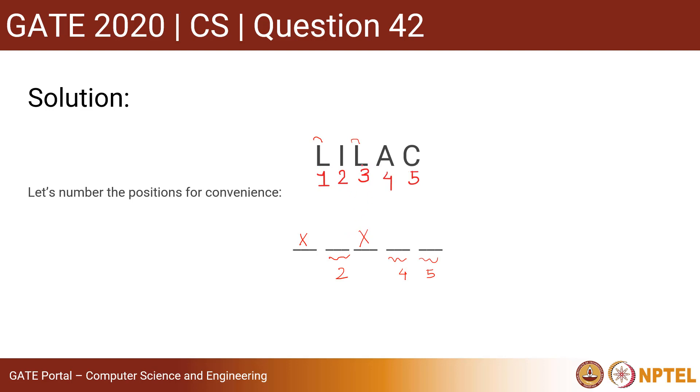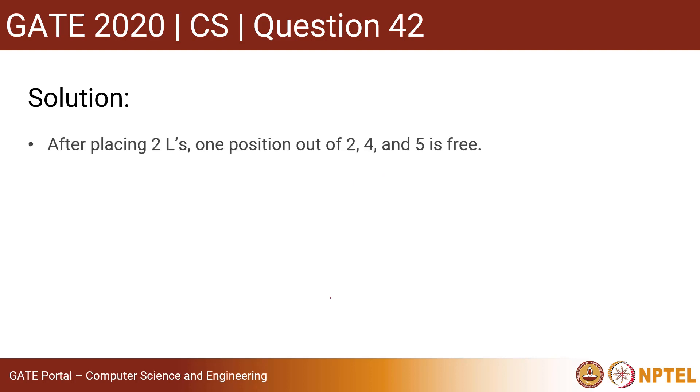And in the question it is given that these two L's will be indistinguishable. So there are 3 positions and we have to place 2 letters which are identical. So this can be done in 3C2 ways, correct? So that equals 3 ways. So the number of ways to place the two L's is 3.